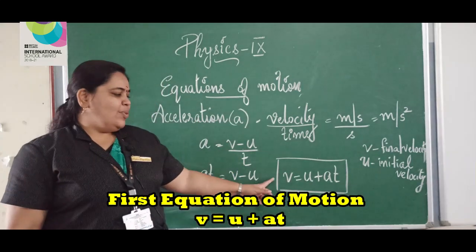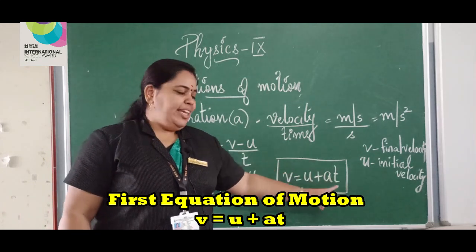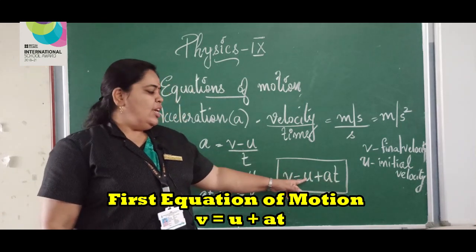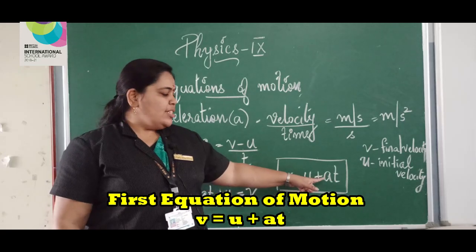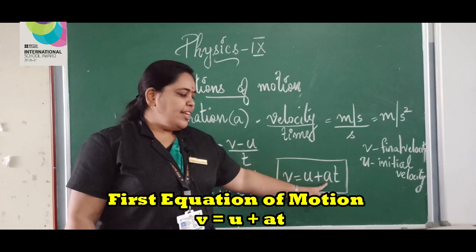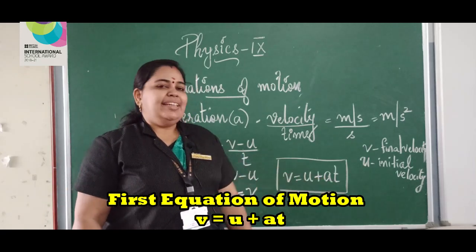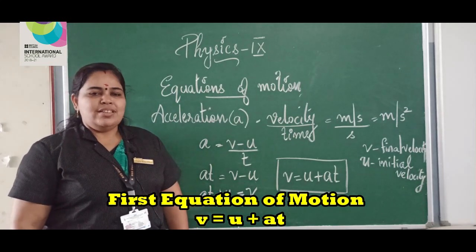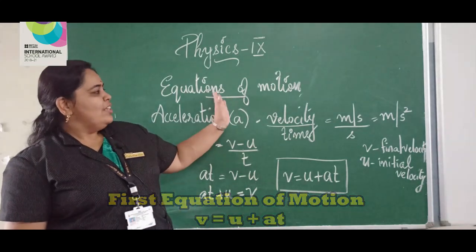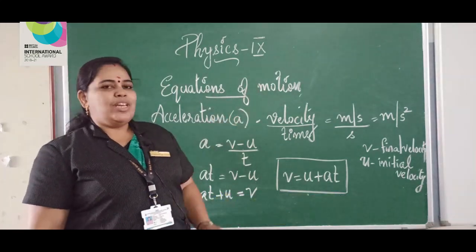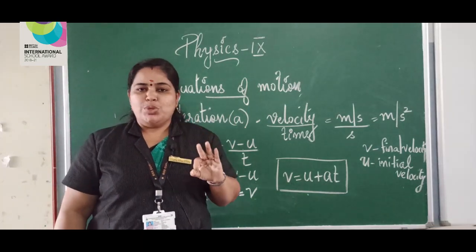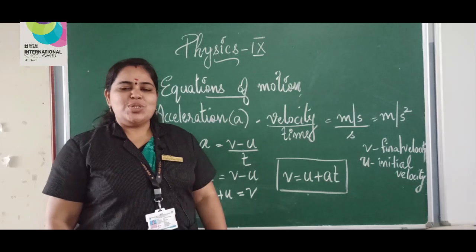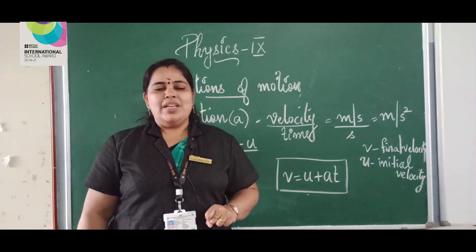V = U + A·T is the first equation of motion, where V is the final velocity, U is the initial velocity, A is the acceleration, and T is the time. Among the equations of motion, there are three equations in total — the first one is now complete: V = U + A·T.